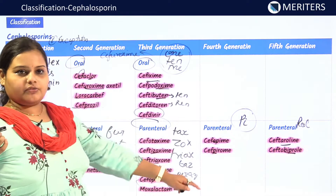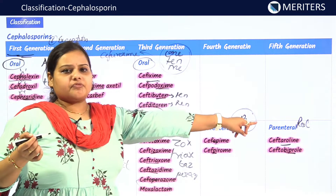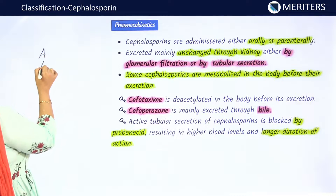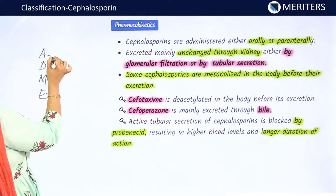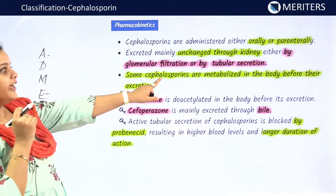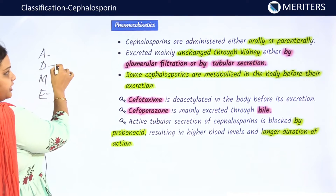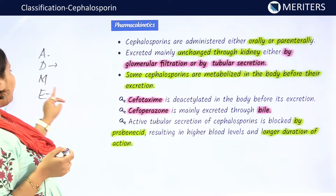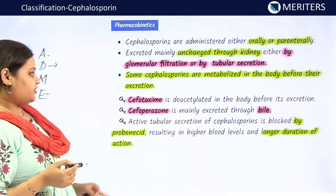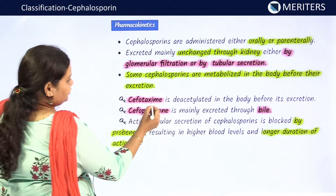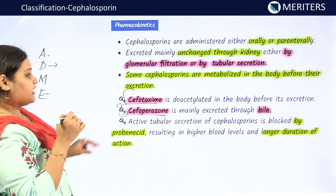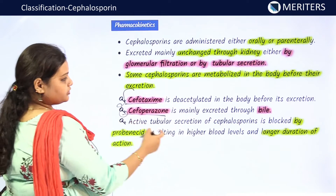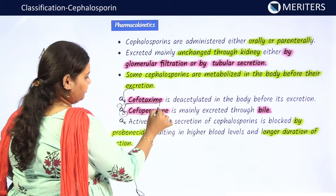For fourth generation, identify by 'pi' and for fifth generation by 'rol.' Regarding pharmacokinetics: cephalosporins are administered orally or parenterally, well distributed, and excreted through the kidney by filtration or tubular secretion. Two important exceptions: cefotaxime is deacetylated in the body before excretion, and cefoperazone is mainly excreted through bile — this is very important and frequently asked in exams.